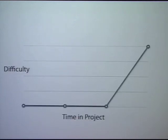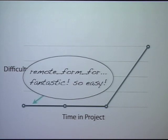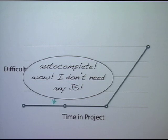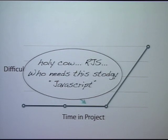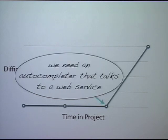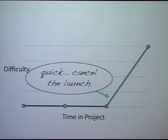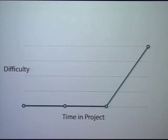Here's the life cycle of a Rails project. You start off and you're like, 'Wow, Remote Form For — that's great, so easy, don't even need to know JavaScript at all.' And then you need an autocompleter, there's a plugin, it really works. And then RJS — everything's great. And then one day your boss comes in and says we need an autocompleter that talks to a web service. And you're like, 'Yikes.' And then it's time to learn JavaScript.